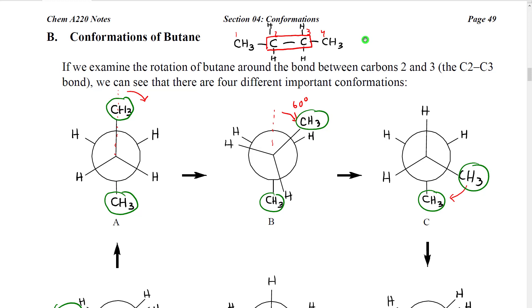What we're going to first do when we look at conformations of a longer chain is define which bond is rotating. In this case, we're going to look at the bond connecting carbon 2 to carbon 3. The way we indicate that is we write C2–C3, with C2 representing carbon 2 of the chain and C3 representing carbon 3.